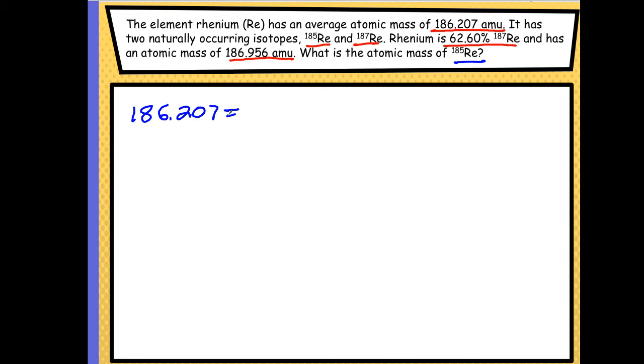So for element 187, my percentage, and I'm going to convert it to decimal right away, 0.6260. So that's my percentage here in decimal form. That's my percentage times its mass, which is 186.956. Okay, so that's the first isotope, RE187.